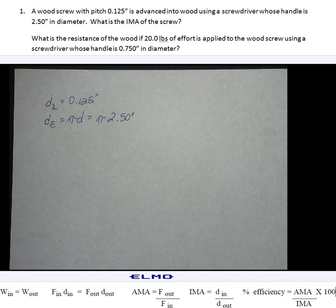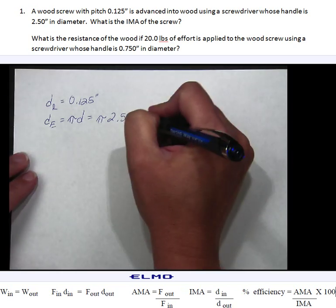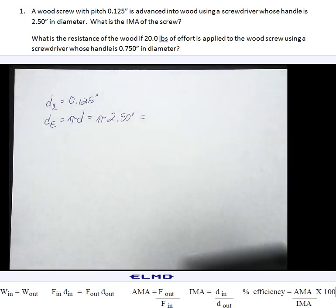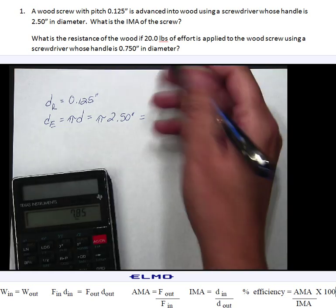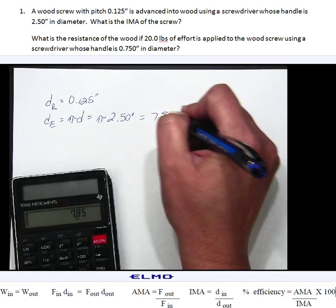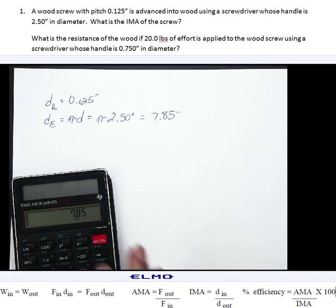Alright so we're going to leave pi and the diameter of that screwdriver says to be 2.50 inches. Okay that equals, now I don't have a pi button on my calculator so I have to actually type in 3.14 times 2.5. So my answer is 7.85 inches for my D_E.